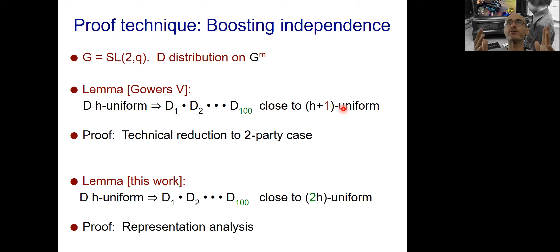And somehow, iterating this, you get the communication complexity result. I'm not going to say how that's done, but it's not complicated. When the thing becomes sufficiently uniform over the entire space, you're good. The proof of this result was a somewhat technical reduction to the two-party case. And what we do in this work, first we prove a better bound. So we prove that you go from h uniformity to 2 times h uniformity. So this gives an exponential number of savings in the number of iterations, and that's what gives the single exponential bound in k in our work as opposed to the double exponential bound in k in the Gowers and Viola previous work.